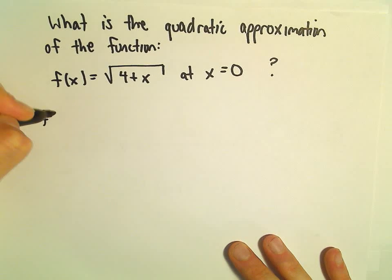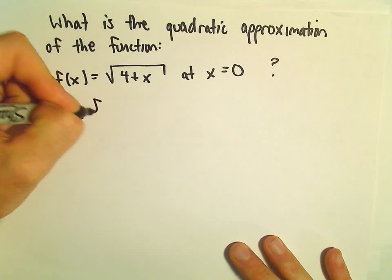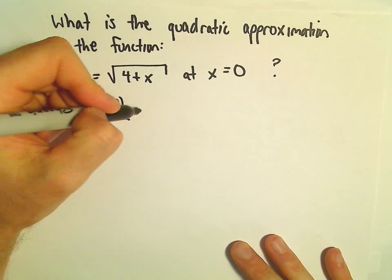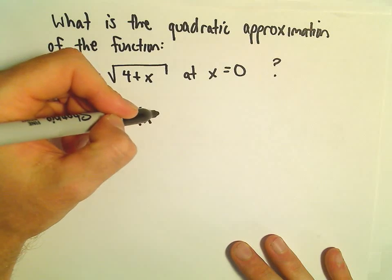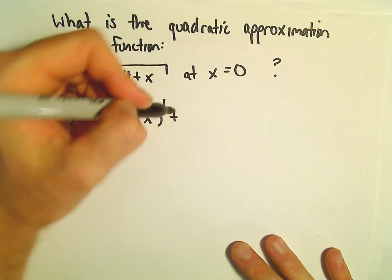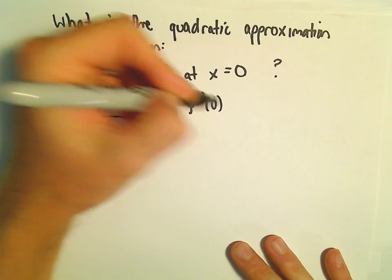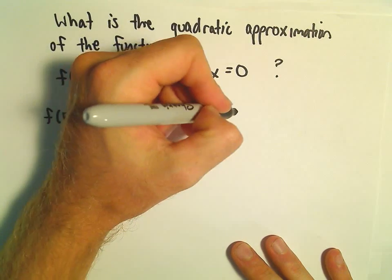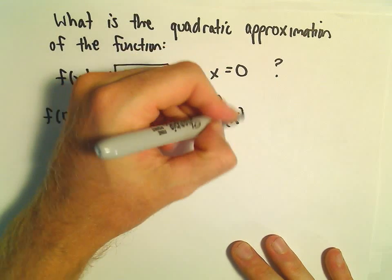So again, we've got to calculate, in this case, f of 0 plus f prime of 0 over 1 factorial times x minus 0 to the first, and then f double prime of 0 over 2 factorial times x minus 0 squared.